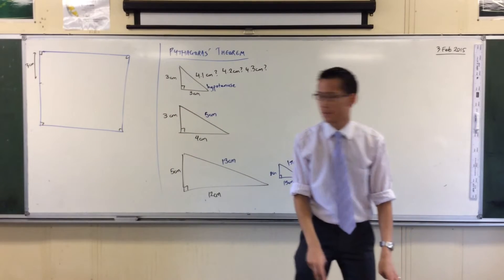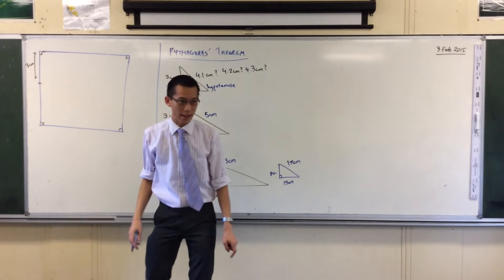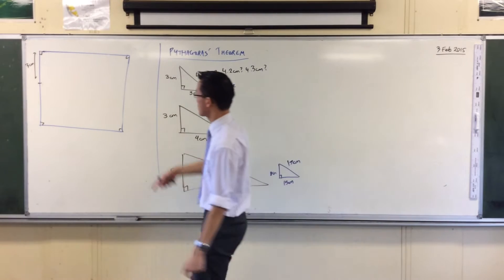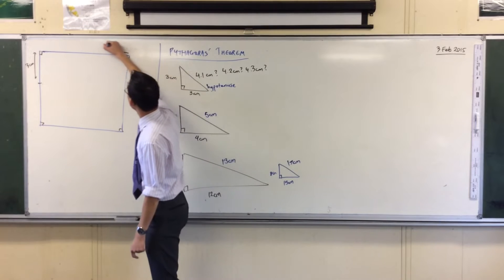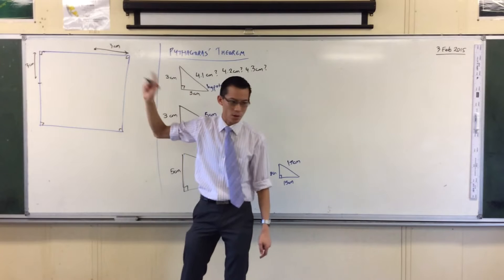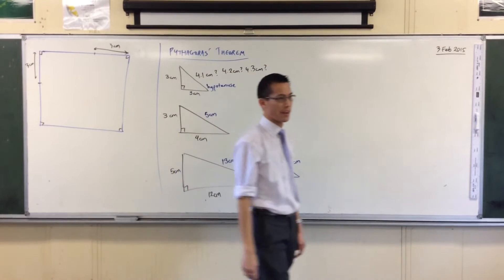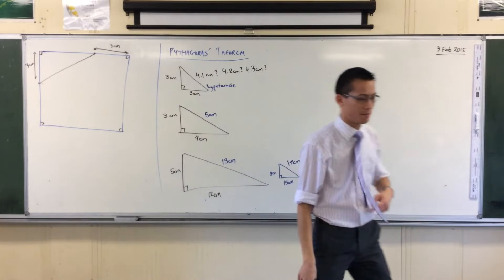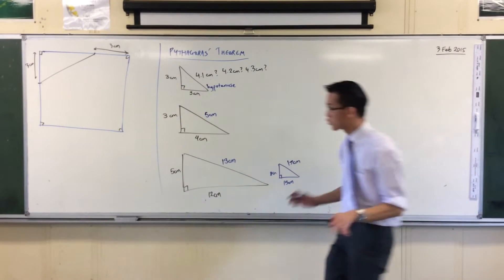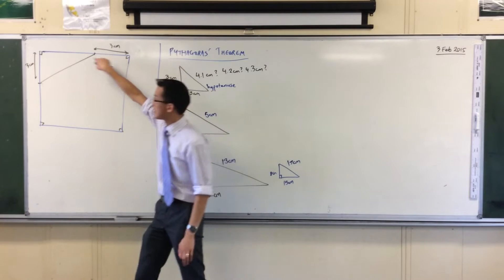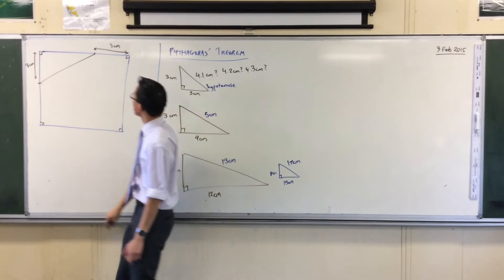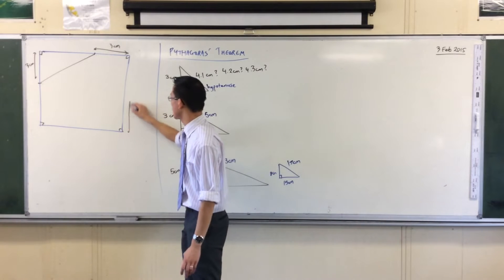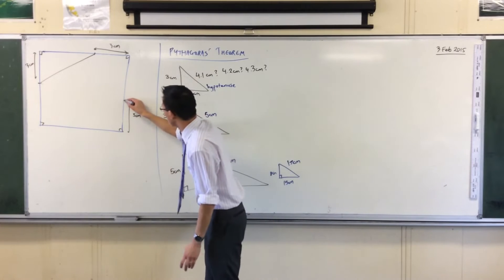Measure three centimeters and put in a little mark there. Also measure that same distance — three centimeters — from this opposite corner, going this way. I missed a step, sorry. Now I've got another point there. Join up those points — that's going to form a right-angled triangle. Better to catch it early. That distance there is the same as that distance there. Now in exactly the same way, take that same distance and measure it from this corner over here — three centimeters — and there will be a little mark.